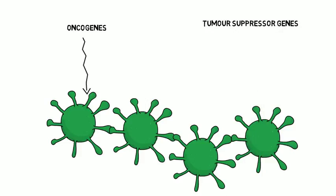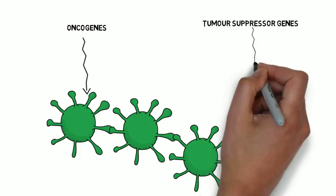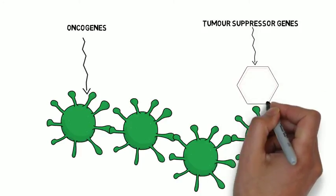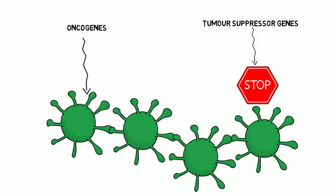The other type of genes involved are called tumor suppressor genes. They function as regulators of cell division and ensure that oncogenes don't divide uncontrollably.